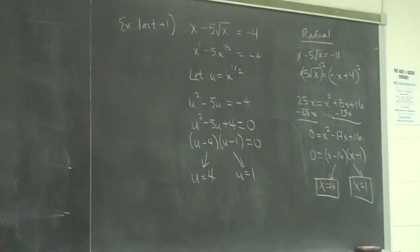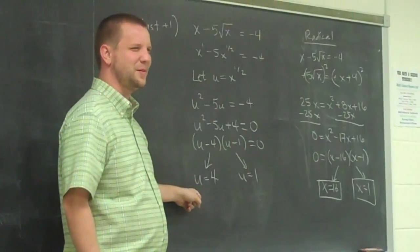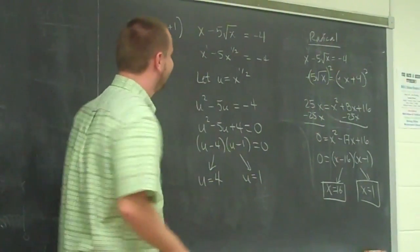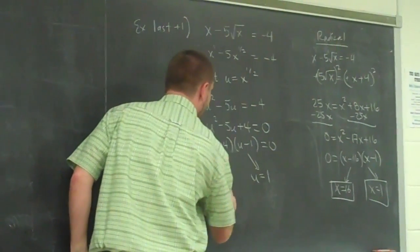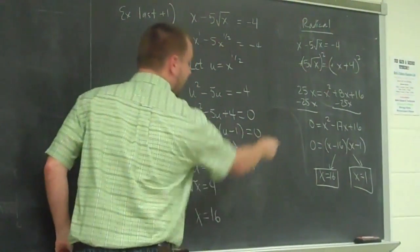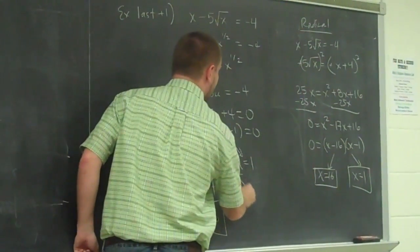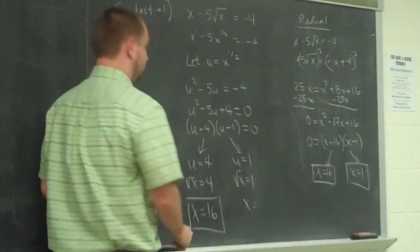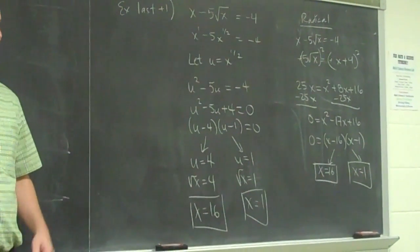So, in terms of x, what was u? We defined u to be the square root of x essentially, right? So if the square root of x equals 4, over here, what's x? Square both sides. And we already showed over there it checks, right? And over here, if the square root of x equals 1, and I square both sides, I get x equals 1. So I get the same solutions either way, right?